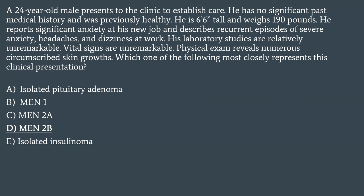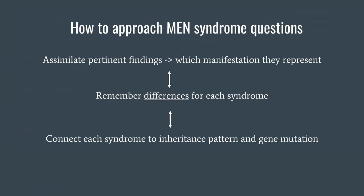The approach to these questions: assimilate the pertinent findings and understand which manifestation they represent. For example, that classic 4Ps syndrome needs to be correlated with pheochromocytoma — that simplifies how fast these questions get done. Then you can remember the differences between each syndrome and connect each syndrome to its inheritance pattern and gene mutation, because sometimes they specifically go after those and add other syndromes.